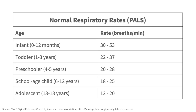As we can see here, infants should have a respiratory rate between 30 and 53 breaths per minute. Toddlers should have a respiratory rate between 22 and 37 breaths per minute. Preschoolers should have a respiratory rate between 20 and 28 breaths per minute. School-aged children should have a respiratory rate between 18 and 25 breaths per minute. Adolescents should have a respiratory rate between 12 and 20 breaths per minute. One way to remember this is that infants should not have a respiratory rate above 60.